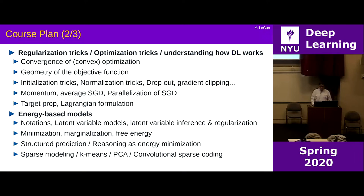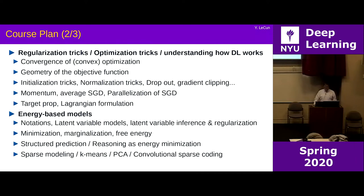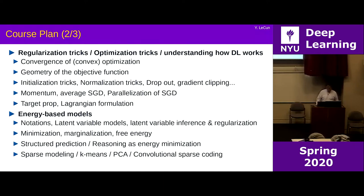There are a few tricks that have come up through a combination of intuition, theoretical analysis, and empirical search: initialization tricks, normalization tricks, and regularization tricks like dropout. Gradient clipping is more for optimization. Things like momentum, averaged SGD, and various methods for parallelizing SGD — many of which do not work. And then something a little exotic called target prop and the Lagrangian formulation of backprop.